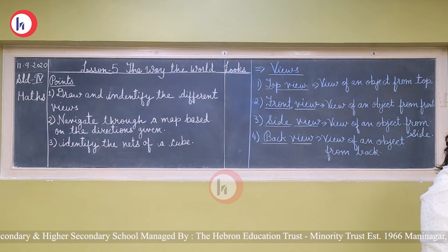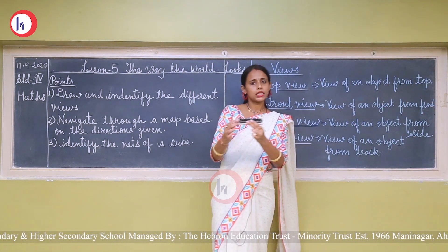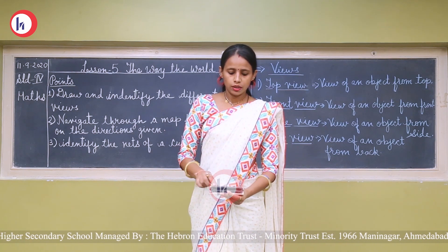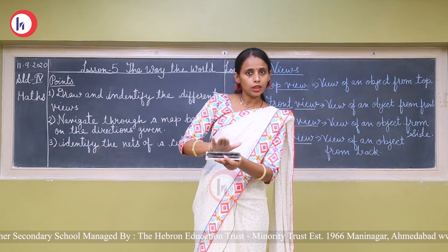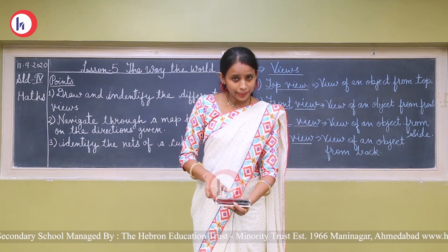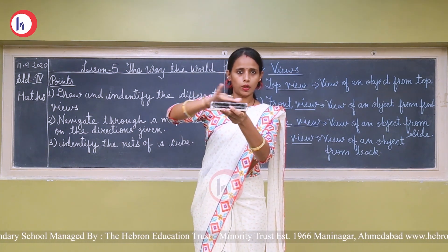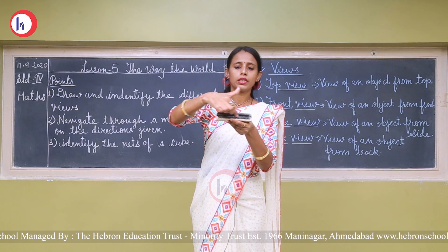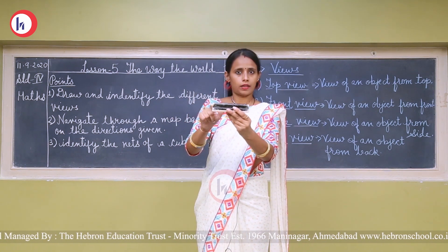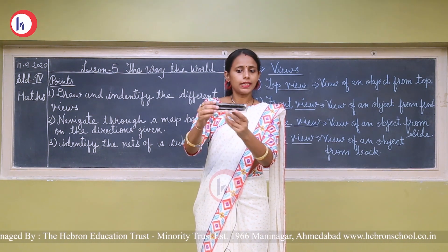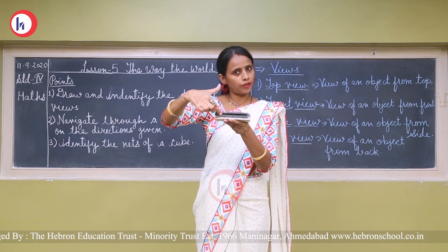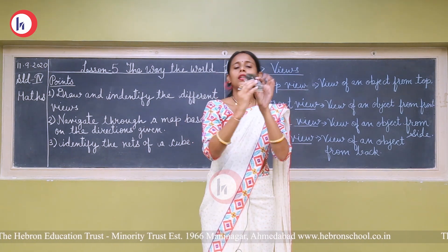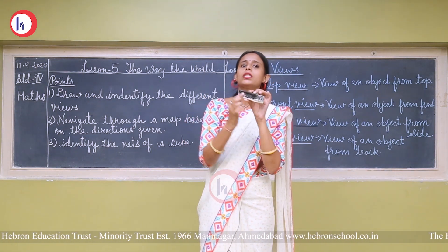Let us solve through an example. What is this in my hand? This is a duster. So this is the top view — I can see only this part on the top. You are seeing this part because it is in front of you, so this is the front view from your side, and I can see this part which is in front of me, so this is the front view from my side. These two sides are the side view, and the part you can't see from your side is the back side.